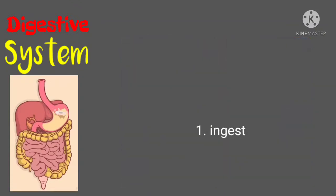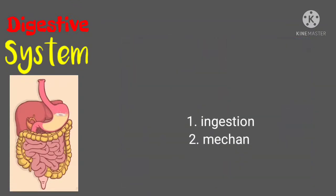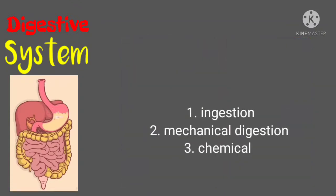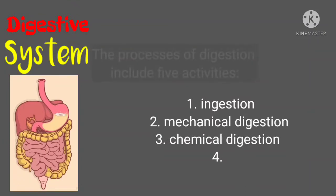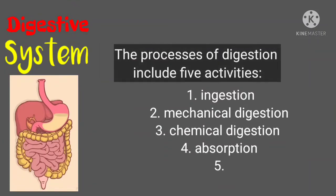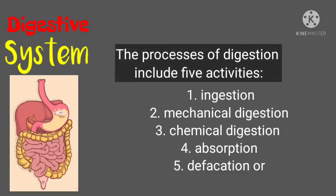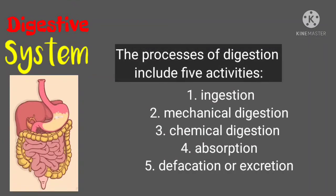The processes of digestion include five activities. First is ingestion. Second is mechanical digestion. Third is chemical digestion. Fourth is absorption. And fifth is defecation or excretion.